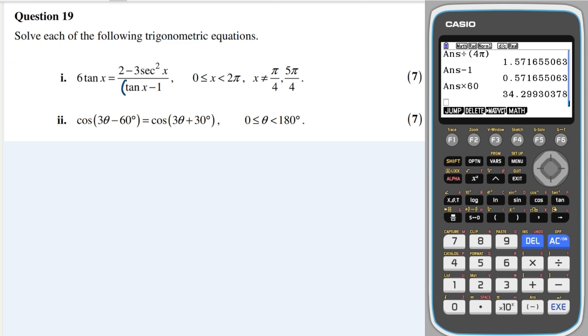Right, we'll take this and multiply it to the other side, which will give me 6tan²x minus 6tanx is equal to 2 minus 3, and sec² is 1 plus tan².